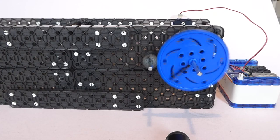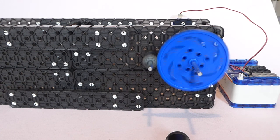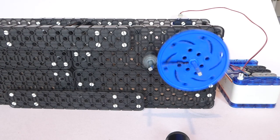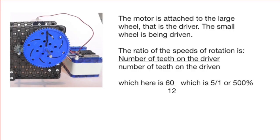If we reverse the example so that the large wheel is being driven you can see here the small wheel goes very quickly. The ratio of the teeth is now 60 to 12, 5 to 1. The small wheel is going around five times faster or 500% faster than the large wheel.